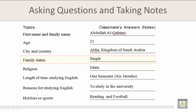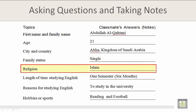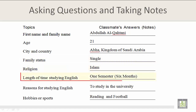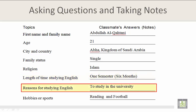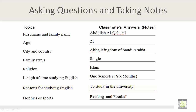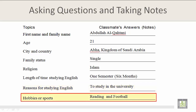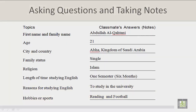and take notes about his or her answers. The first part is his religion, which is Islam. His length of time studying English is one semester, or six months. His reason for studying English is to study at the university. His hobbies or sports are reading and football. Thank you.